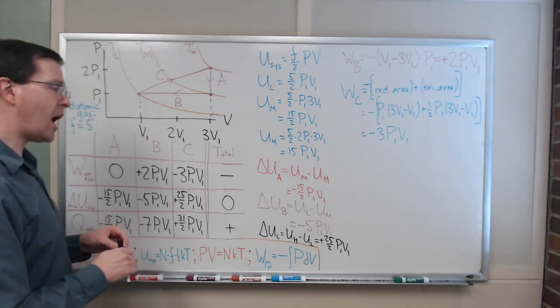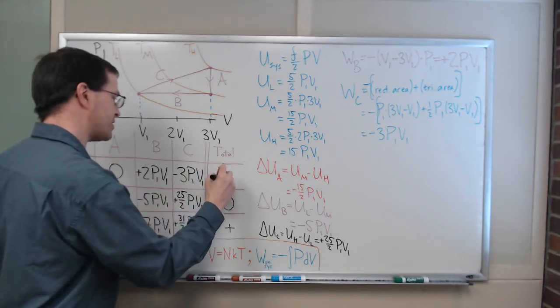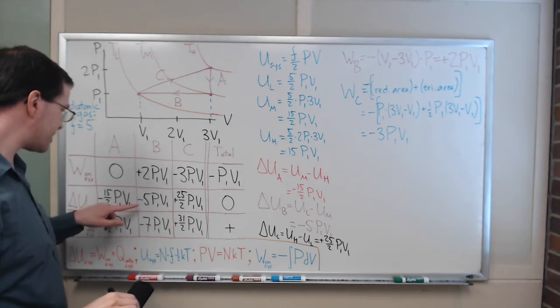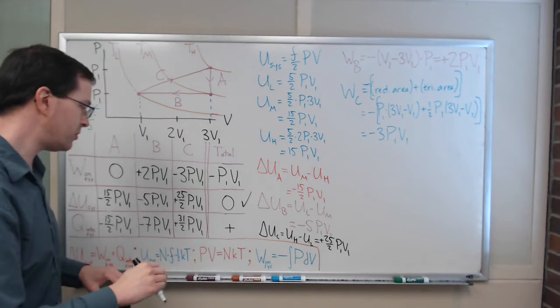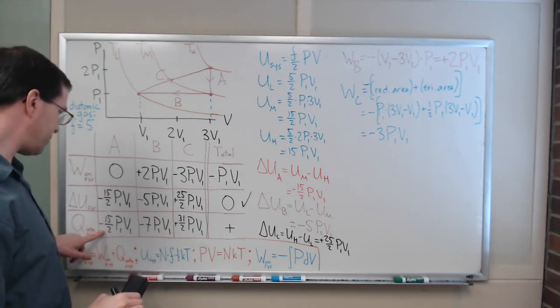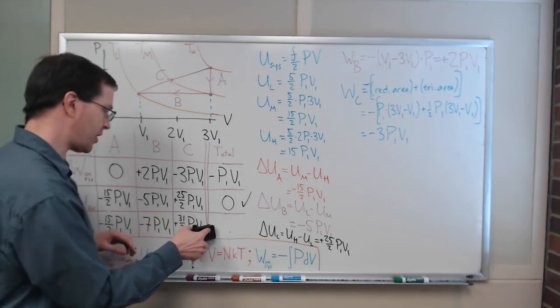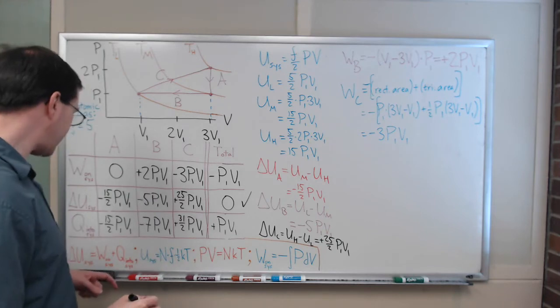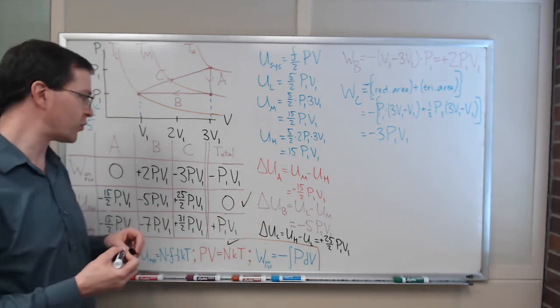Now all I need to do is just add across. Plus 2 minus 3 is negative 1 times P1 V1. I should double check. I know this has to be zero because it's a cyclic process. Negative 15 halves minus 5 is 10 halves, gives me negative 25 halves plus 25 halves equals zero. Good. That is a double check. Then across here, I'm going to do 31 halves minus 15 halves first, which is 16 halves, which is 8. And 8 minus 7 is 1. So I get plus 1 P1 V1. And as another double check, work plus heat for the whole cycle equals delta U for the whole cycle, and it does.